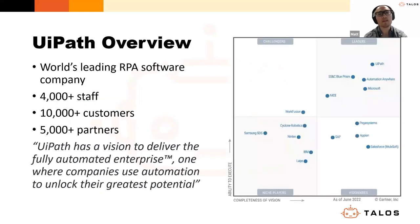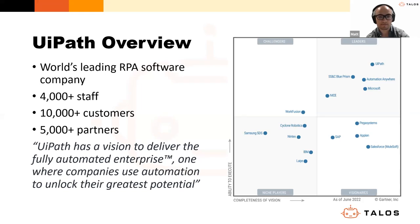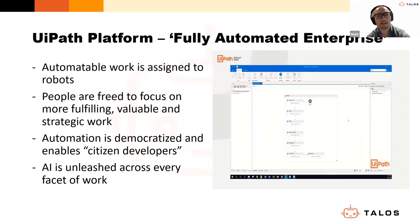When we talk about RPA, the inevitable question is who is the main player. According to Gartner, it is UiPath. The Gartner Magic Quadrant is the published result of comprehensive research in a specific market, evaluating how well each technology provider is executing on their stated vision. In the RPA space, UiPath is recognized as the leader — considered best in class for RPA technology today and in the immediate future — a position they've held for several years.